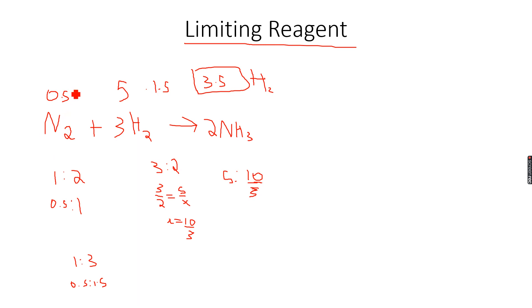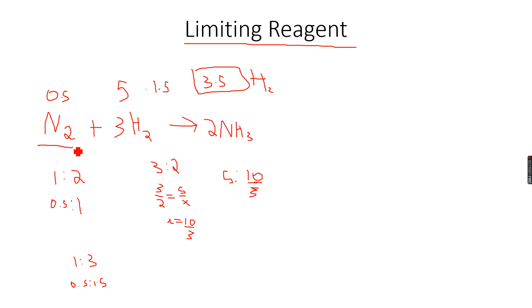The amount of product we get is always dependent on the amount of the limiting reagent. Since nitrogen is the limiting reagent, we will get 1 mole of ammonia — all the nitrogen reacts, and 0.5 moles of nitrogen gives 1 mole of ammonia. Whenever we calculate products, we always identify the limiting reagent first. Here, nitrogen is the limiting reagent, so all calculations are based on nitrogen.